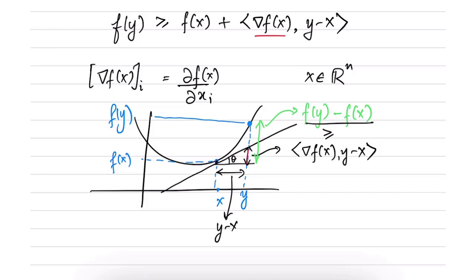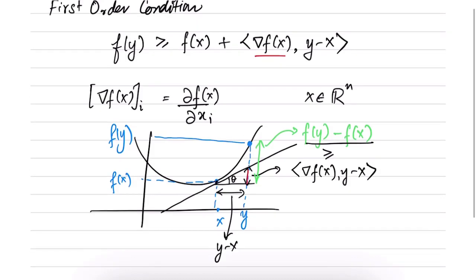An interesting point about the first order condition — and any condition relying on derivatives — is that the derivative is a very local thing. It depends only on the function value and how the slope changes at a given point x. Yet convexity, which is a global property of the function, is being specified in terms of this local property. This first order condition holds for all y in the domain of f.